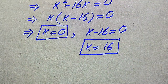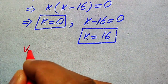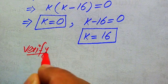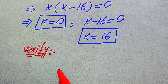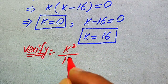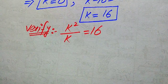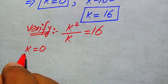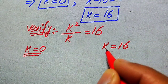Next, we need to verify whether these two roots are actual solutions or extraneous roots. For verification, we copy down the given equation: k squared divided by k equals 16. On one side we will verify k equals 0, and on the other side we will verify k equals 16.